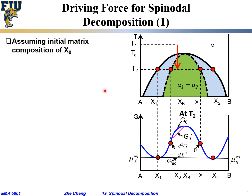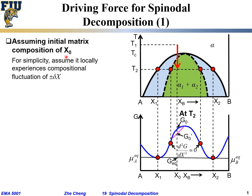Let's assume the initial system matrix composition is x0, which falls between the two inflection points at T2 temperature. Assume the system was quenched from T1 — above the critical temperature — down to T2, which is within the spinodal chemical spinodal composition.